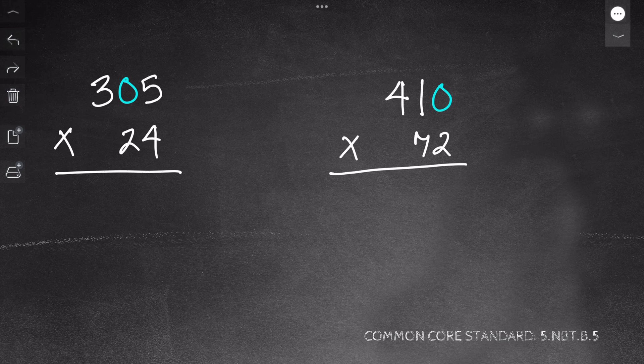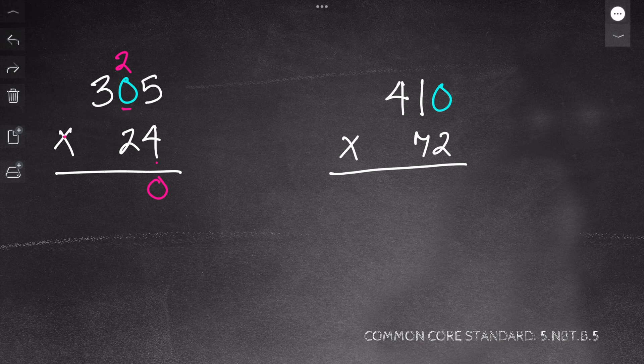So 4 times 5 equals 20, so I regroup my 2 and put my zero. And then I have 4 times 0, which equals 0 plus 2 is 2. And then I have 4 times 3, which equals 12.